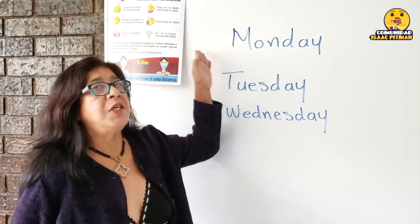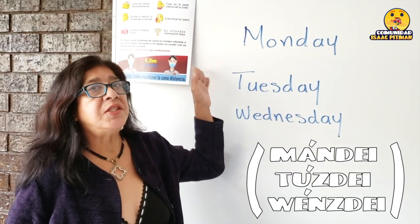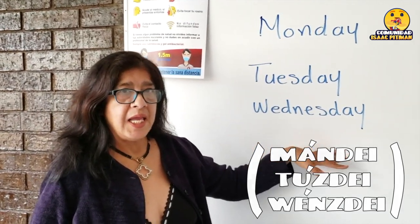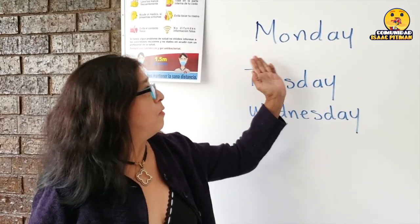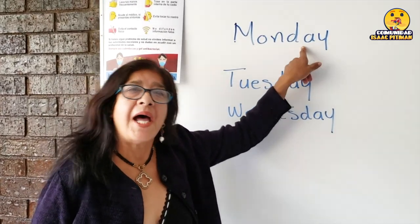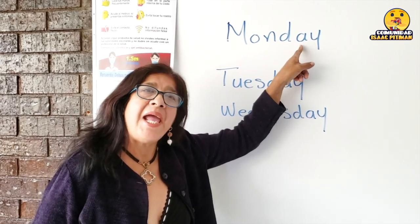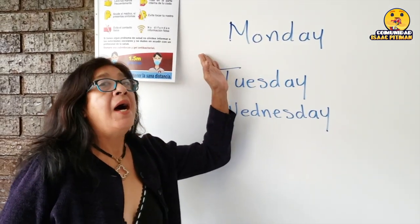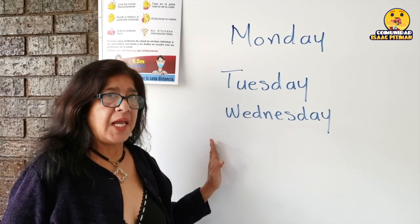Por lo tanto, la pronunciación correcta sería 'Monday, Tuesday, Wednesday.' Cuando ellos caen en el error que cometen comúnmente dicen 'Monday,' pero cuando recuerdan que la letra A se pronuncia A, es cuando ya se dan cuenta que sería 'Monday, Tuesday y Wednesday.'